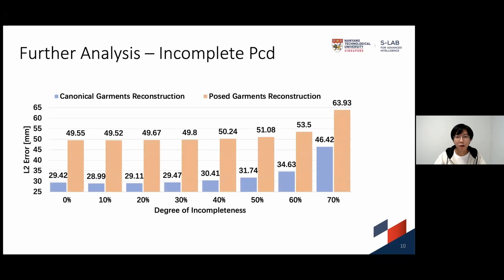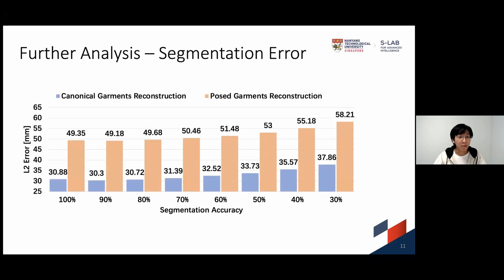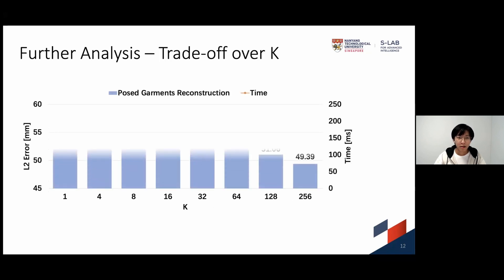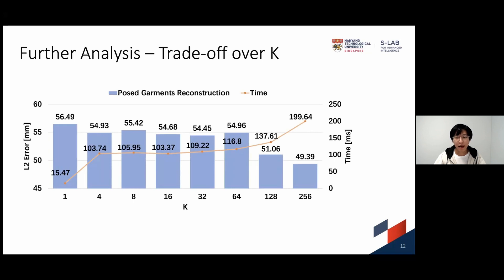To further investigate the performance of Garment 4D when facing imperfect point clouds, we randomly corrupt point cloud inputs with different degrees of incompleteness. As shown in the chart, decent reconstruction results can be obtained at up to 50% incompleteness. Even though our method depends on semantic segmentation on input point clouds, we show that our method is robust to noisy segmentation results by manually constructing different segmentation accuracy. The number of nearest neighbors k of interpolated LBS can influence reconstruction quality and inference time; we choose to set k to 256, with minor computational overhead thanks to GPU parallel implementation.